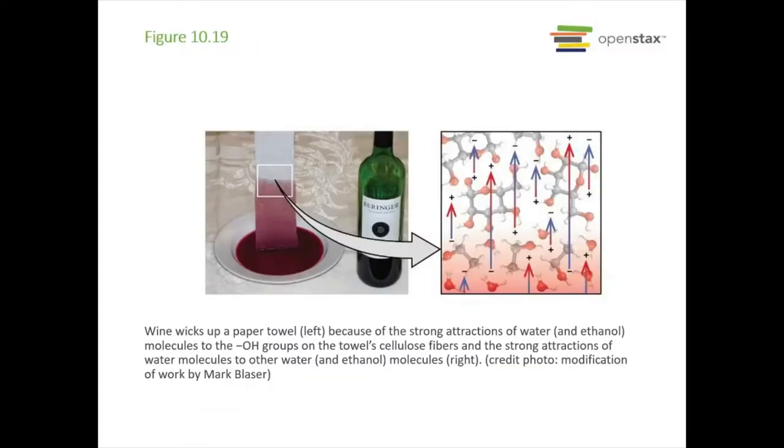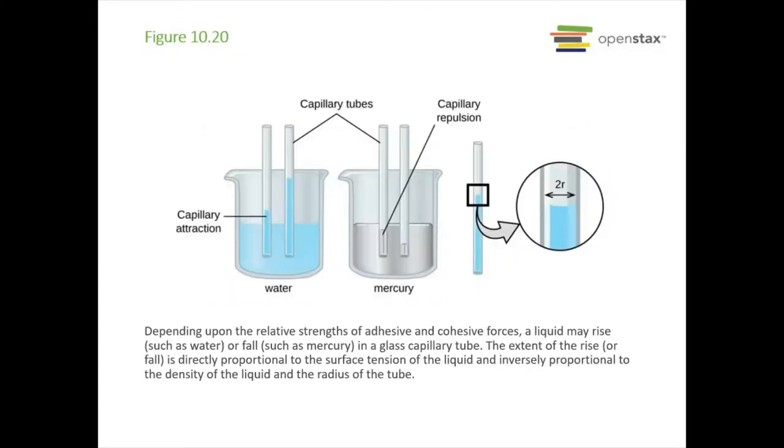Here's an example. Wine wicking up a paper towel. That's a waste of wine because of the strong attractions of water and ethanol molecules to the cellulose fibers in the towel, and also the attractions of the water to other water and other ethanol molecules. So when we talk about capillary action and capillary tubes, this is what we're talking about. The liquid can either rise or fall. It'll rise with something like water, but in mercury it actually falls from the tube.